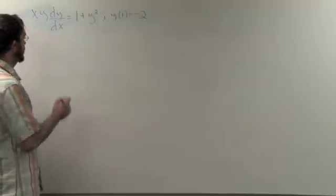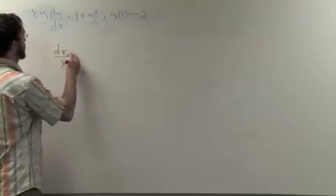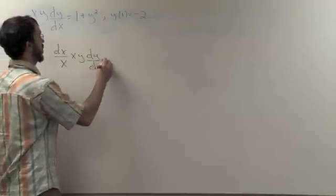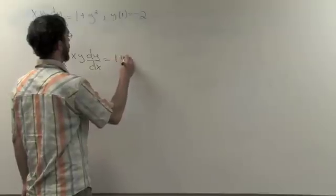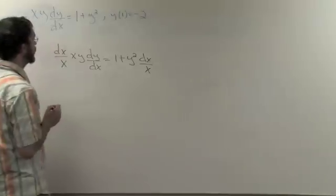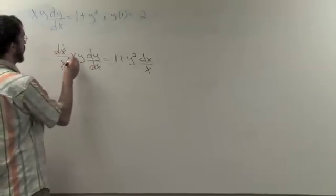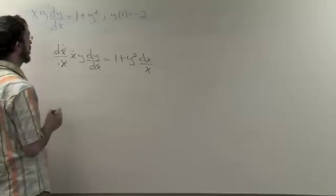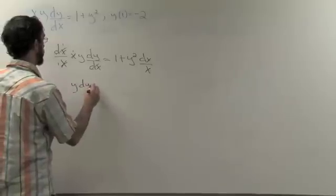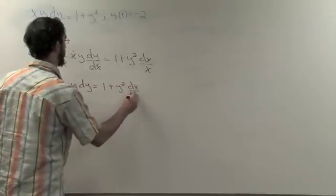The first step we're going to take is multiplying both sides of the equation by dx over x. Notice now that the differential elements of x reduce to 1, along with the x values. This now leaves us with y dy equals 1 plus y squared, dx over x.